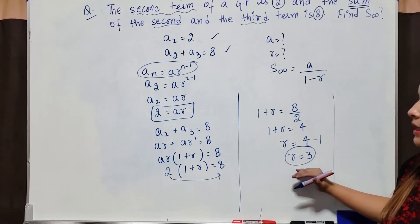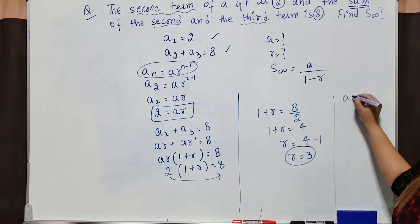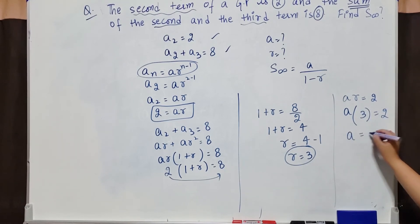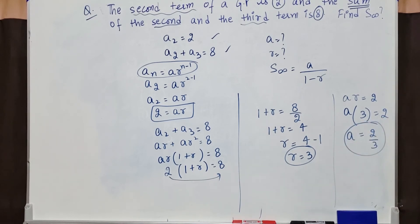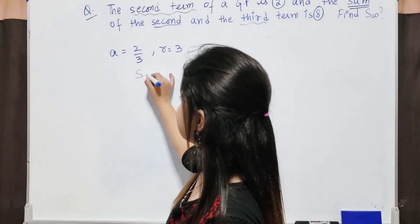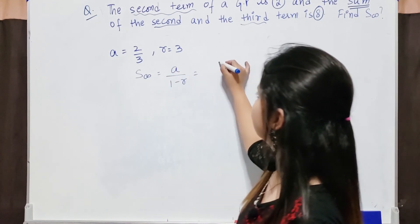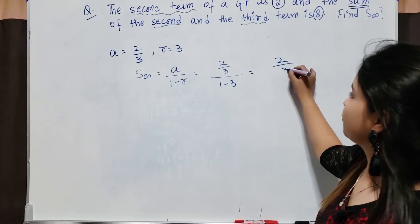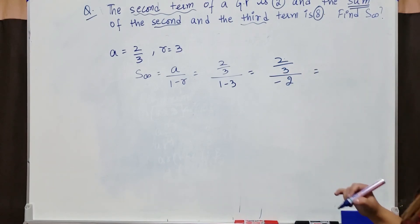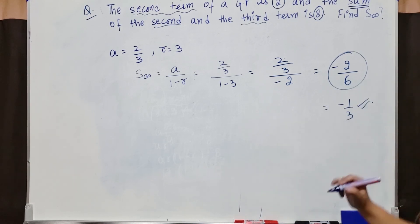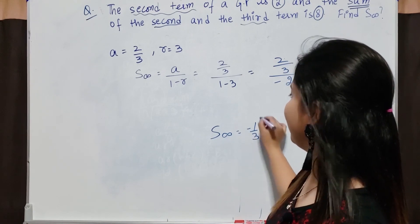Now I have the value of r = 3. Using ar = 2 with r = 3: a times 3 = 2, so a = 2/3. Now using these two values, I can find S∞. S∞ = a over (1 minus r) = (2/3) divided by (1 minus 3) = (2/3) divided by negative 2, which is negative 2/6, or negative 1/3. So my S∞ is negative 1/3.